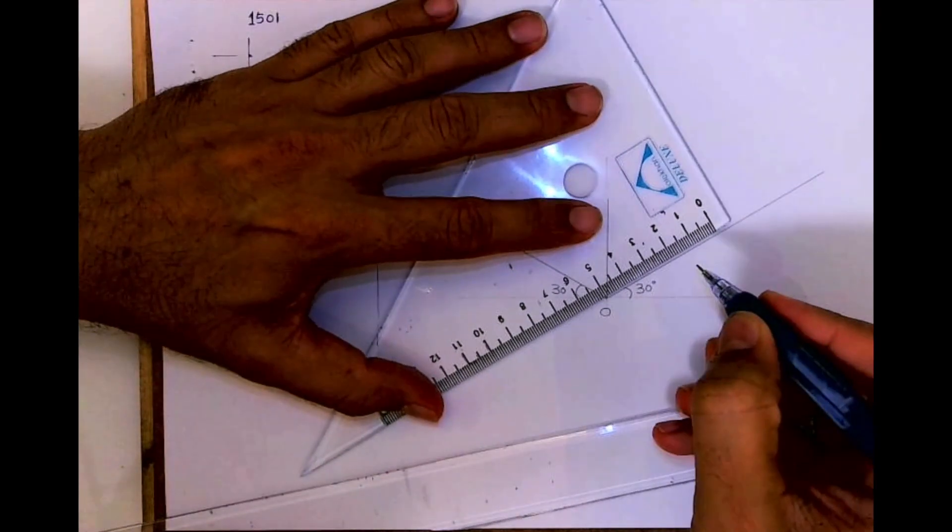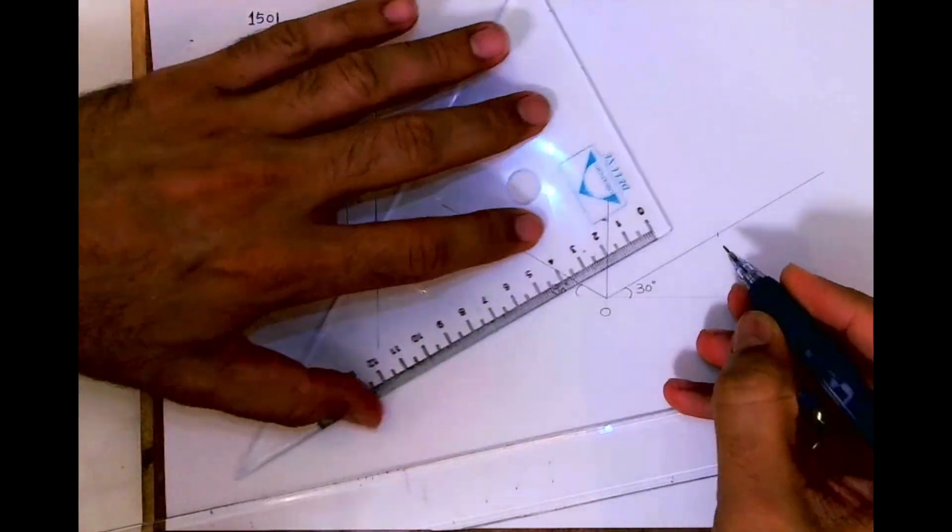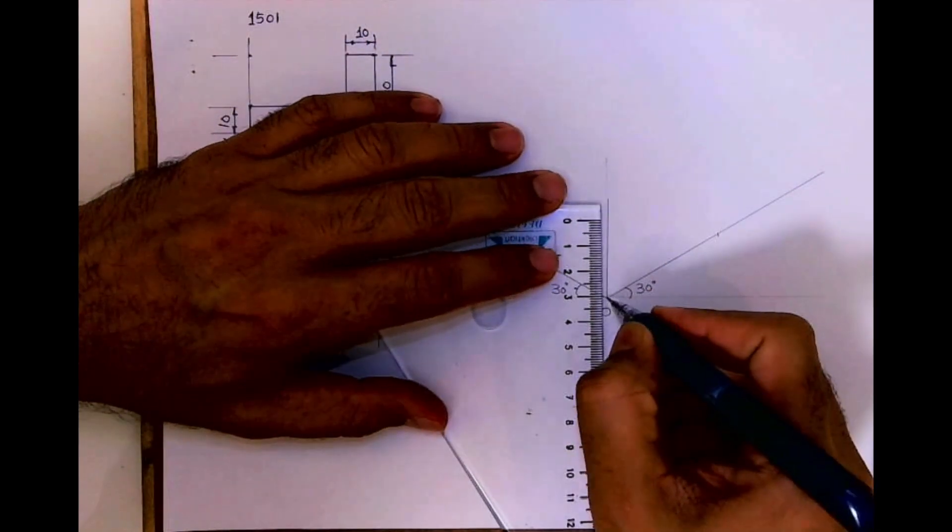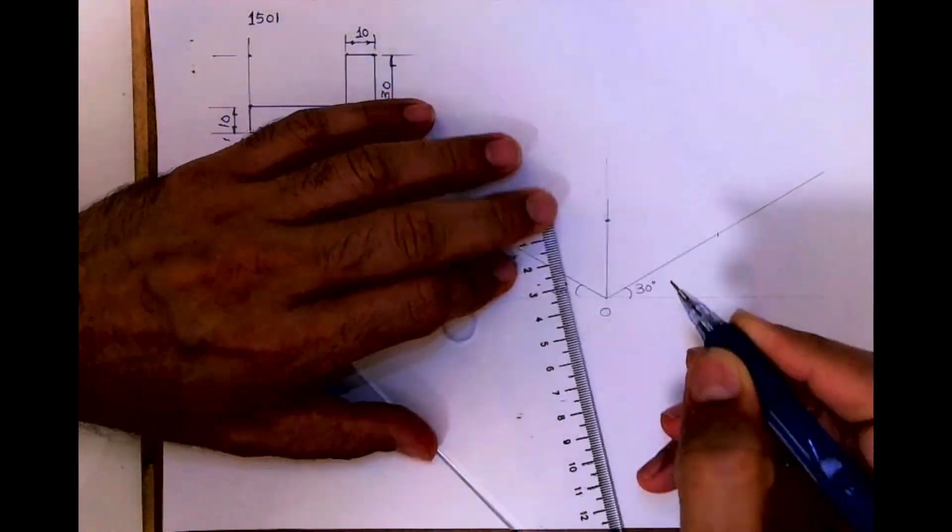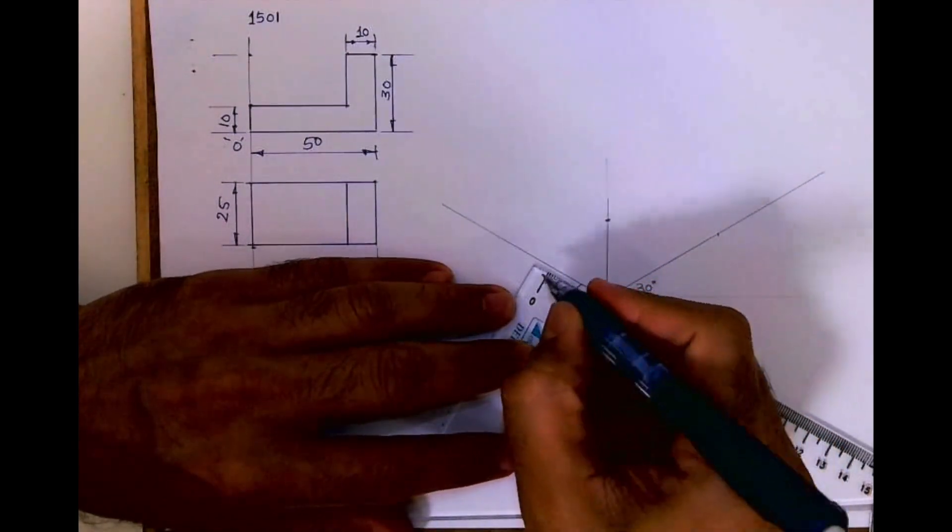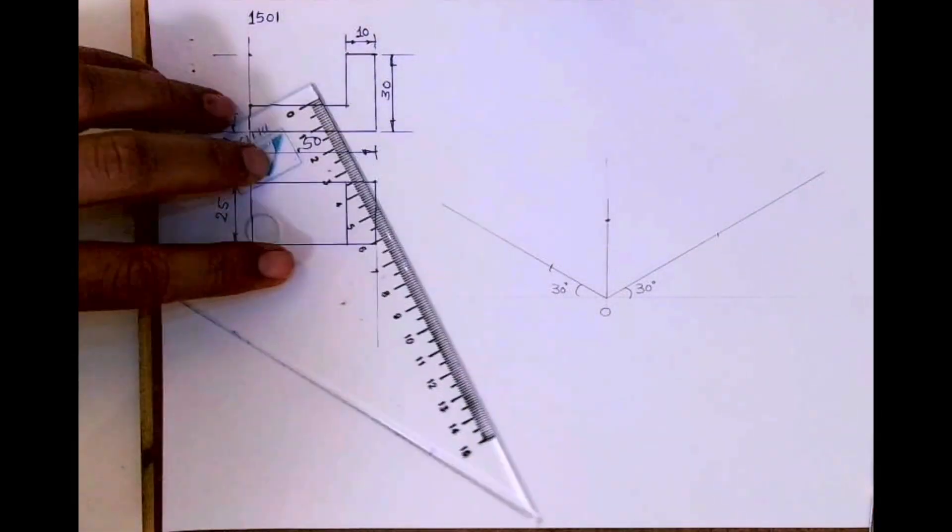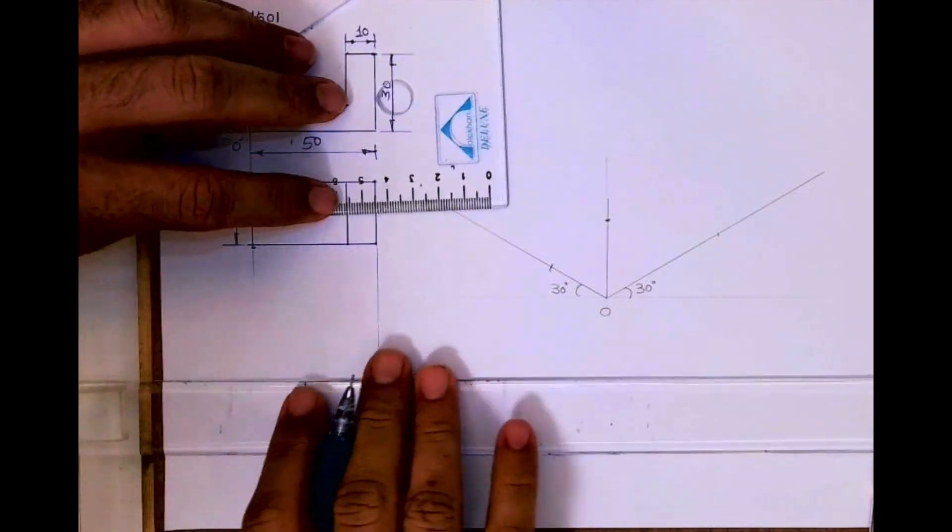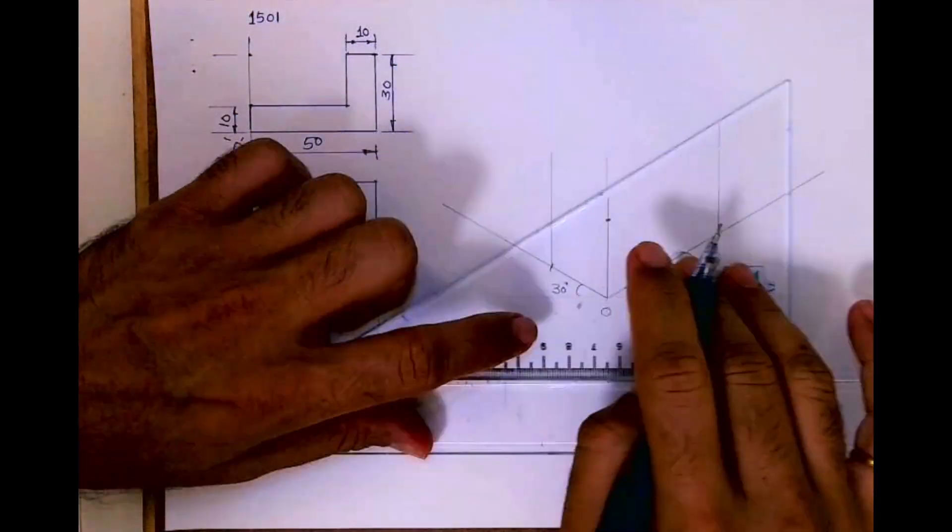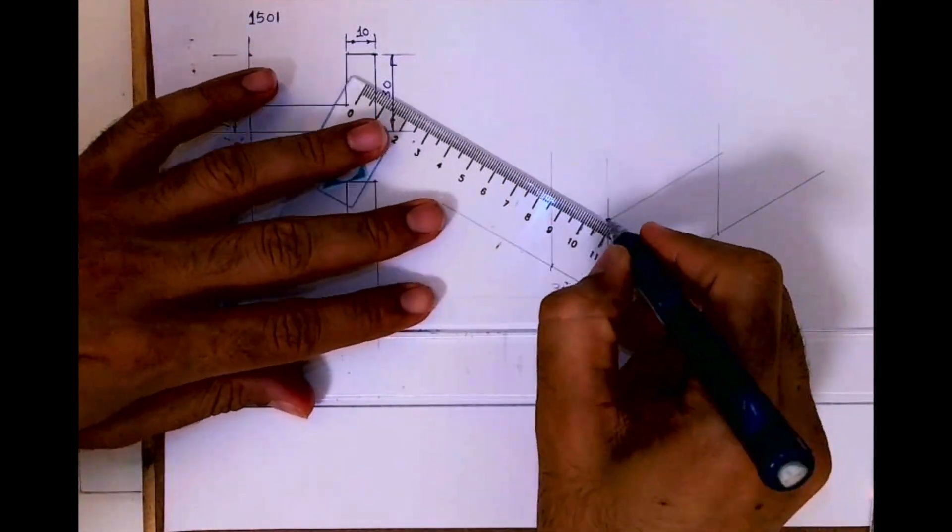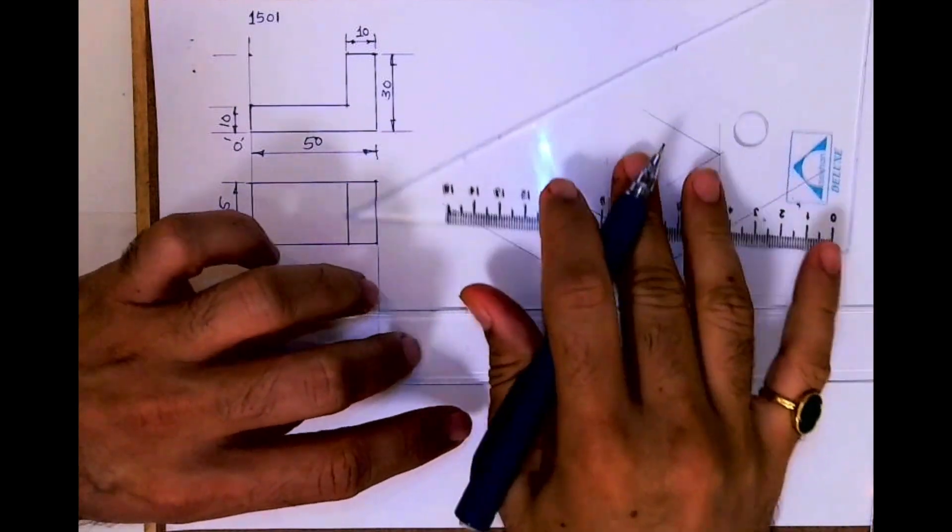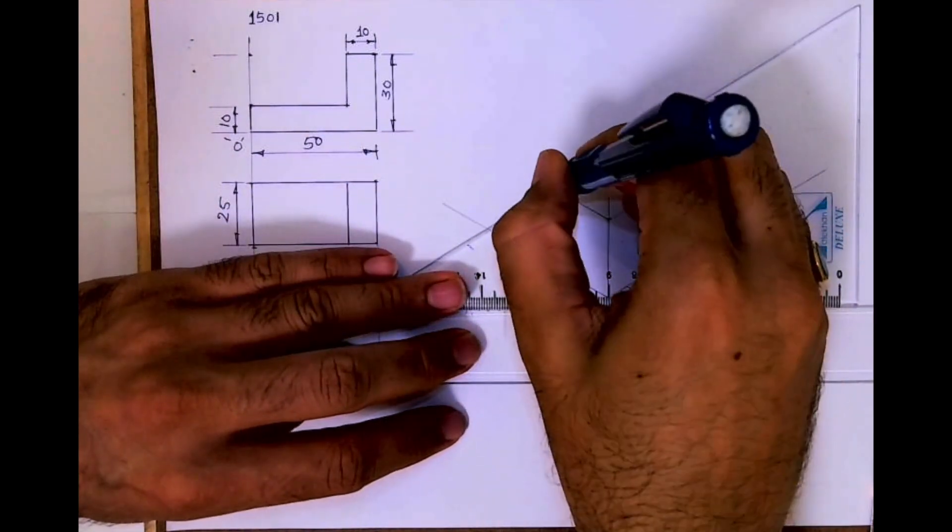Now if you see, 50 is on the right side, height is 30, and width is 25. So first we are drawing the box. I will mark 50, 30, 25, then draw a vertical line from here. Now we draw parallel lines like this, so we are done with the box.